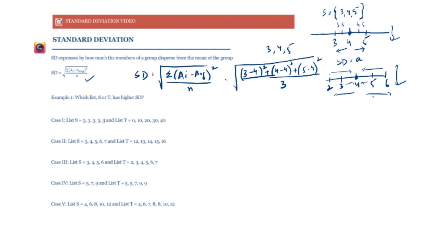For element 3, we compute 3 minus 4 and square it. For element 4, it's zero squared. For element 5, we square 5 minus 4, add them all, and divide by 3 — the number of elements — then take the square root. For the set {2, 3, 4, 5, 6} with mean still 4, we compute (2−4)² + (3−4)² + 0 + (5−4)² + (6−4)², divided by 5.